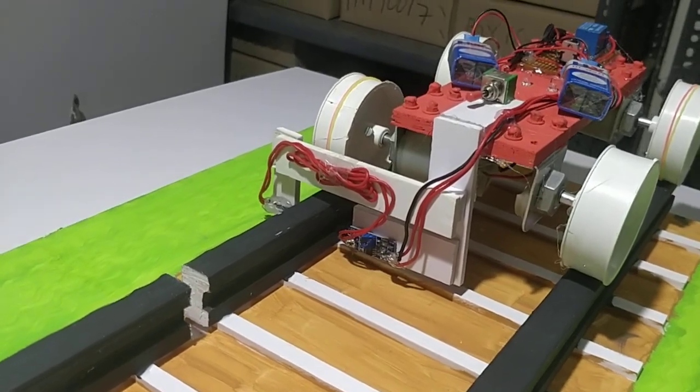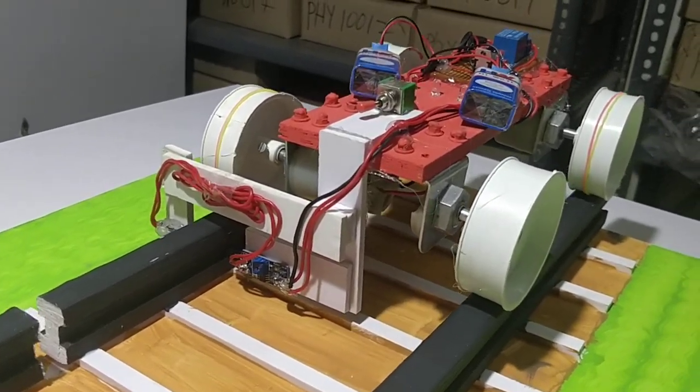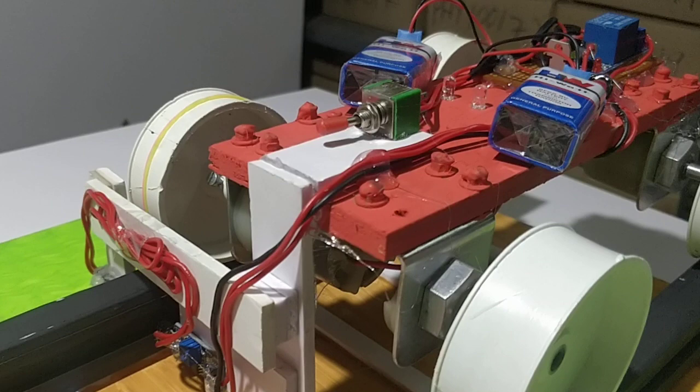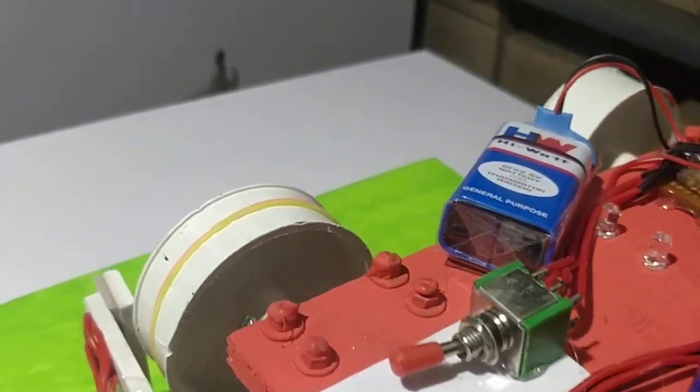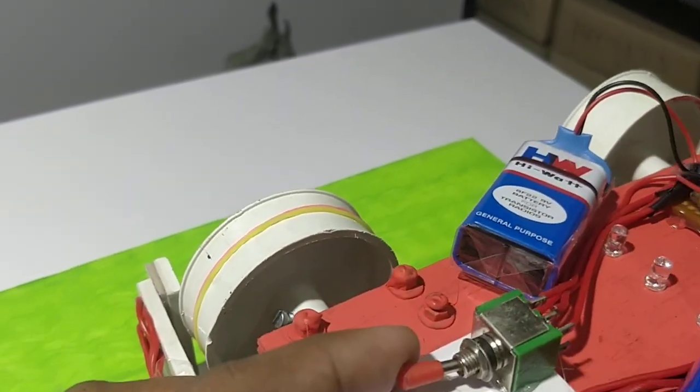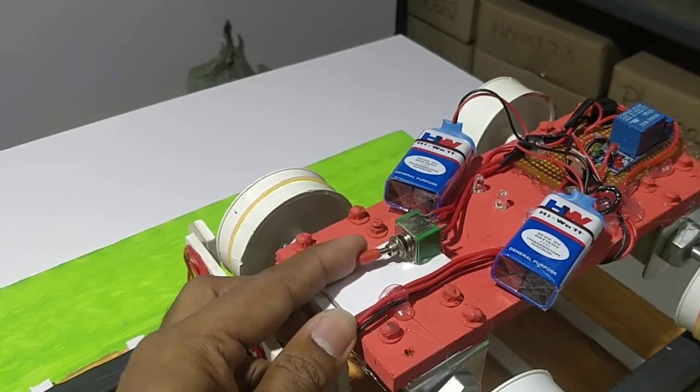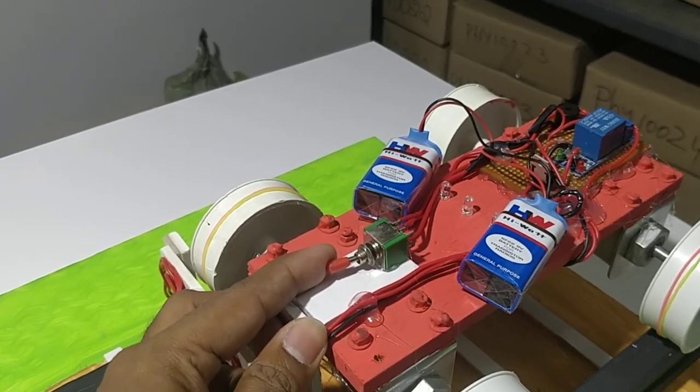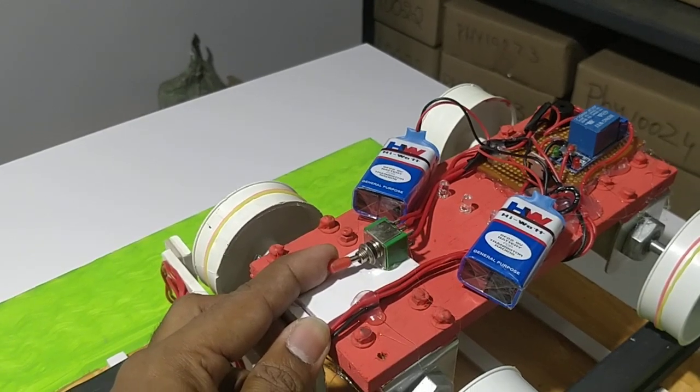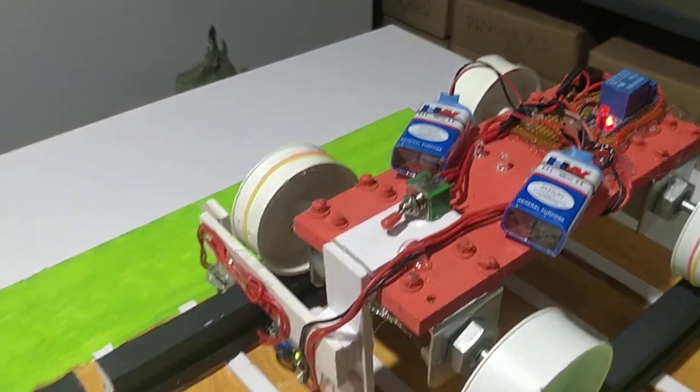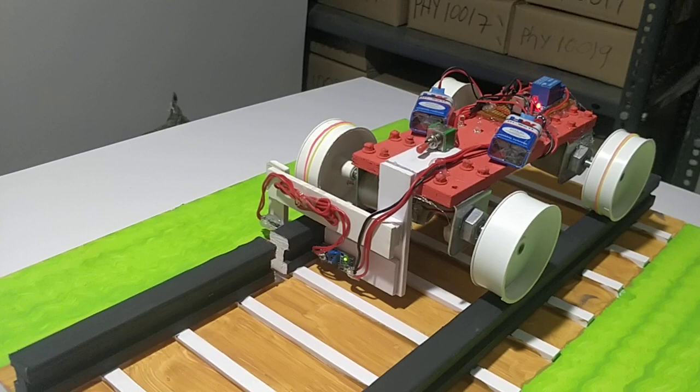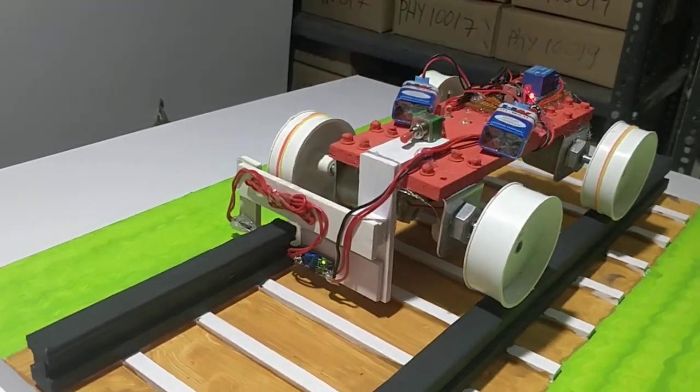Let's see the demonstration. This is the power supply switch. Once we switch on this switch, the robot starts its work, so let's check it. Now switching the robot on, and it detects a crack.